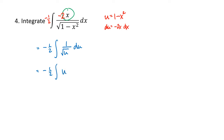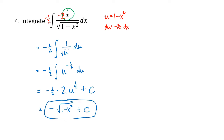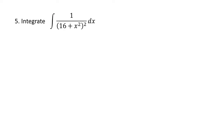We think of this as u to the negative one half. We add 1 to the exponent, giving u to the positive one half, then divide by the new exponent and multiply by the minus one half factor. That gives us minus the square root of 1 minus x squared, plus c. So don't just apply trig substitution without thinking. First ask yourself: do I really need to use trig substitution, or is there an easier way?